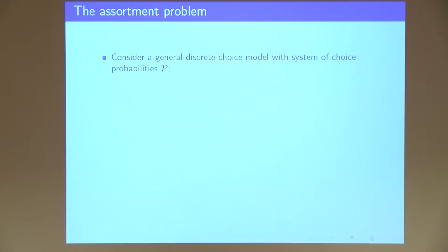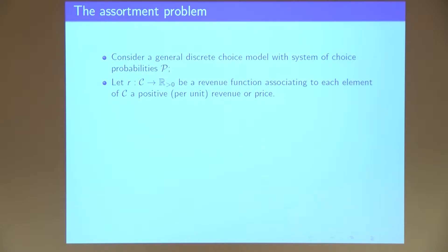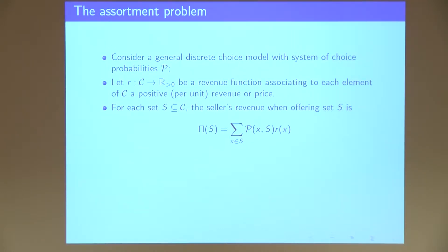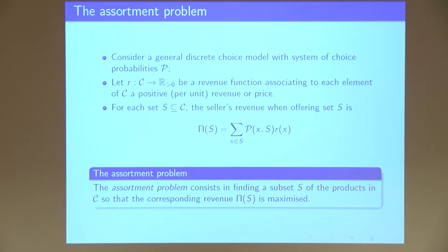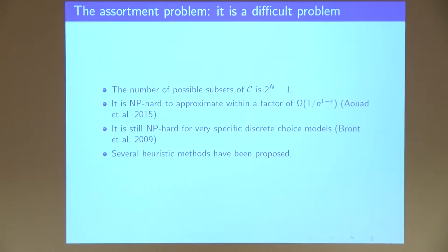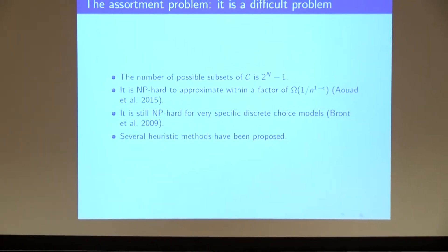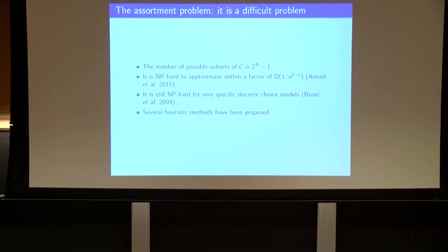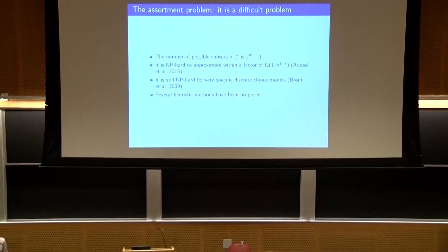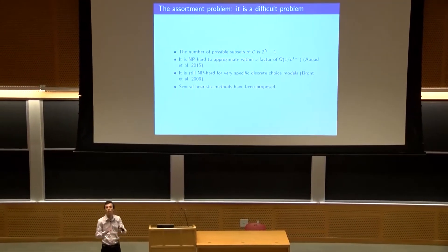So what is the assortment problem? We fix a choice model P and have a revenue function for each item in set C. For every subset shown to consumers, we can calculate the expected revenue per customer, which is the probability that someone buys product X multiplied by the revenue of that item. The assortment problem is finding the best subset S to show to consumers to maximize expected revenue. This is a very complicated problem — there are 2^n different subsets, and there's a strong non-approximation result showing you cannot approximate this to within a 1/n factor. It's also NP-hard even for simple models like a mixed multinomial logit with two classes.